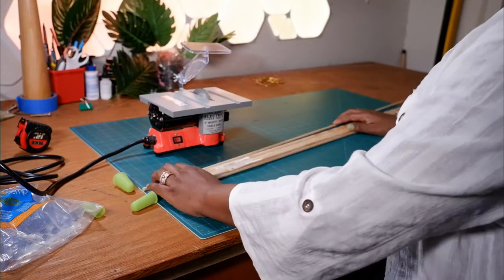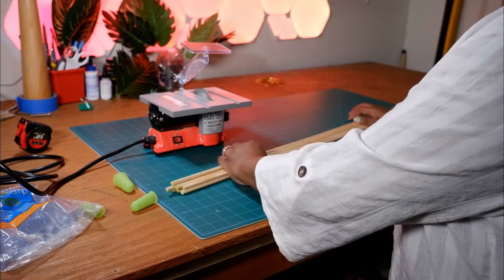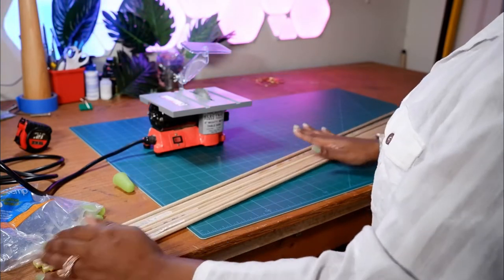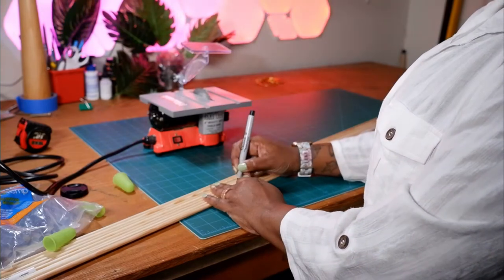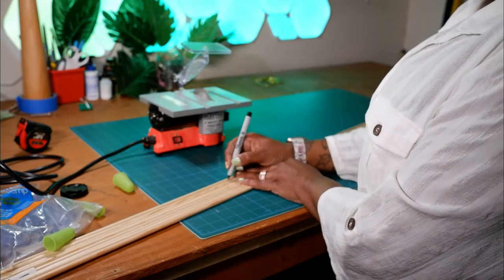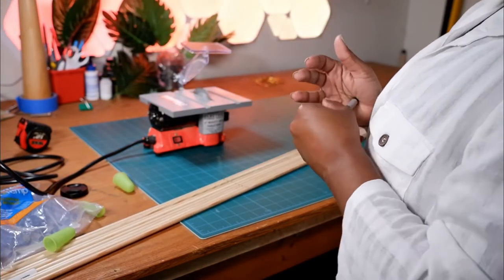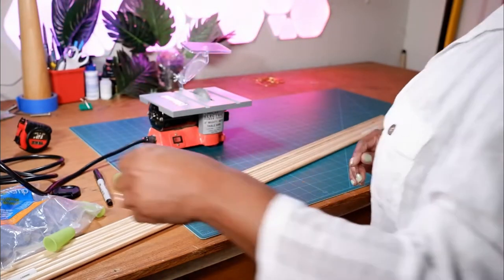So as you can see, I only marked one dowel and then I put that dowel next to all the other unmarked dowels. And then I'm going to draw a line across all the dowels at that one measured point on one of the dowels so that I don't have to measure over and over again.